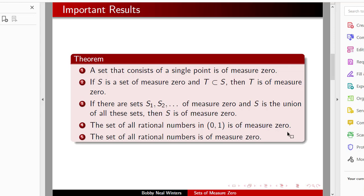If there are a countable number of sets s1, s2, etc. that are of measure zero and s is their union, then s is of measure zero. The set of all rational numbers in the interval zero, one is of measure zero and the set of all rational numbers is of measure zero.